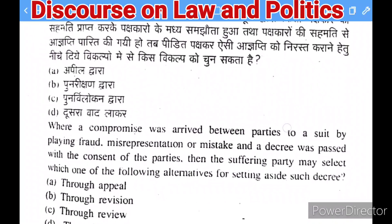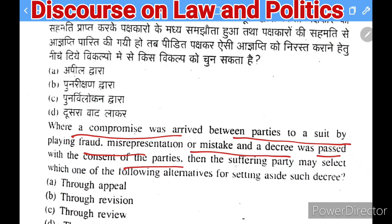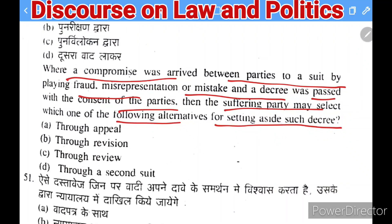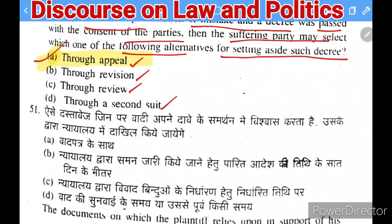Next question: where a compromise was obtained between parties to a suit by fraud, misrepresentation, or mistake and a decree was passed with the consent of parties, the aggrieved party may seek to set aside such decree through — appeal, revision, review, or a suit. The most appropriate option is appeal.